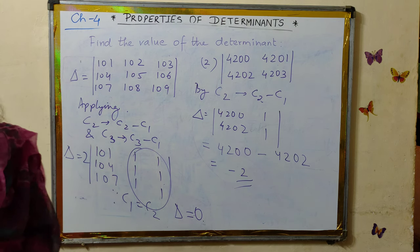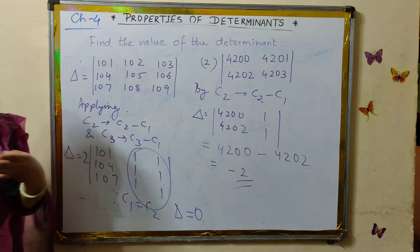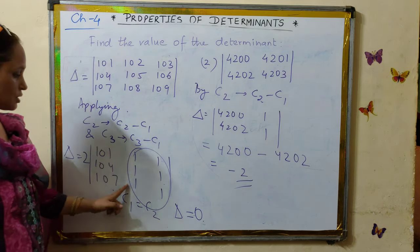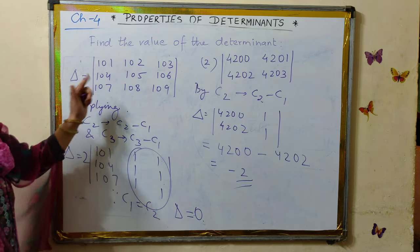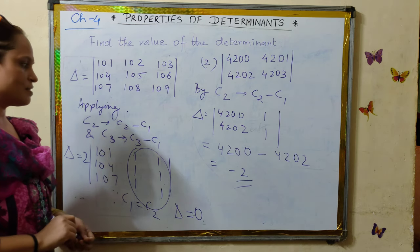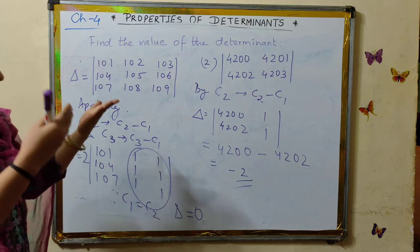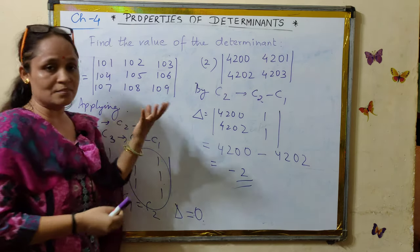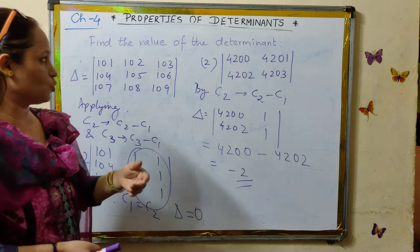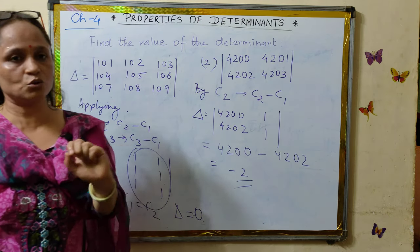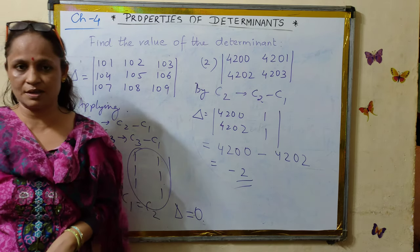These were the assignment questions, and you can see how using properties they have been simplified — a lot of calculation work has been reduced, and the speed of calculations is much faster this way. Wherever you find entries of higher order or large numbers, look to apply the properties. In the next video, we will pick up questions from exercise 4.2 of the chapter, which is based on properties of determinants, where the entries will be algebraic.